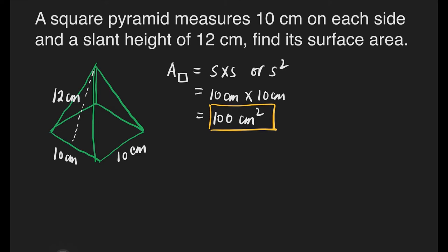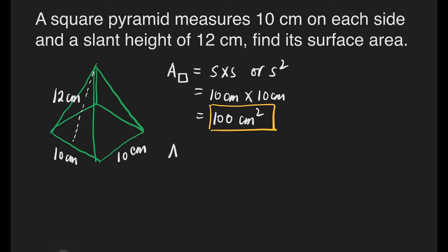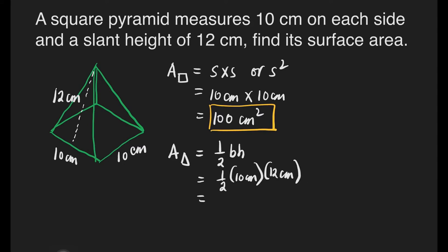Now let us solve for the area of one triangular face. After solving for one triangle's area, we can multiply it by 4 because we have 4 triangular faces. The formula for the area of a triangle is one half times base times height. That's one half times 10 cm times 12 cm. 10 times 12 is 120 cm squared, and one half of 120 is 60 cm squared.